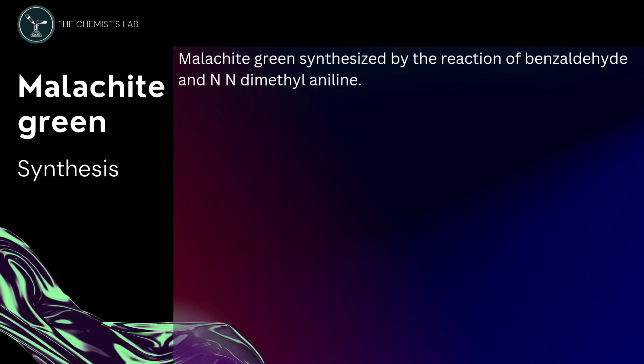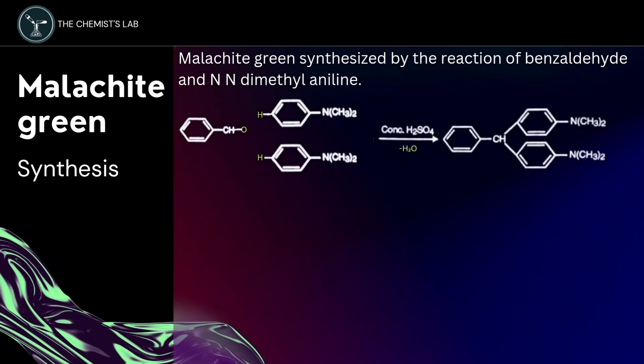Let's look at the synthesis of malachite green. It is synthesized by the reaction of benzaldehyde and N,N-dimethylaniline. The first step is the condensation of benzaldehyde with dimethylaniline in the presence of sulfuric acid to get the leukobase by the elimination of water molecules.